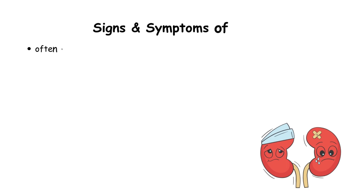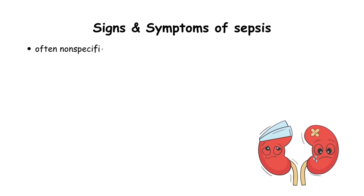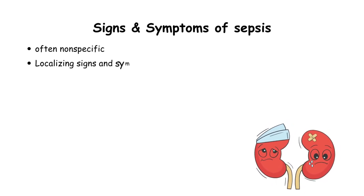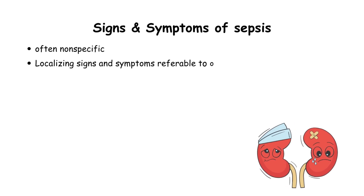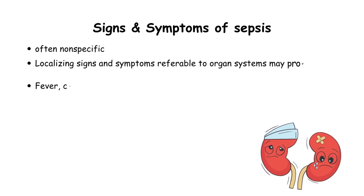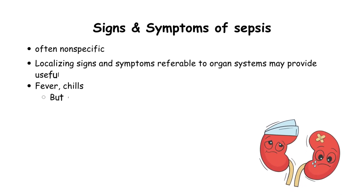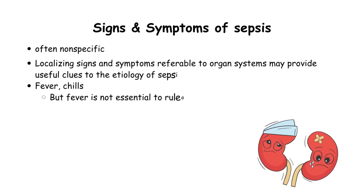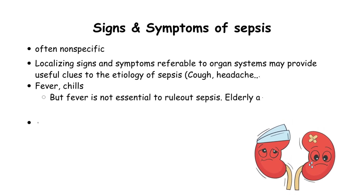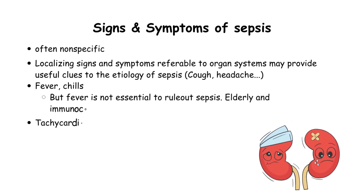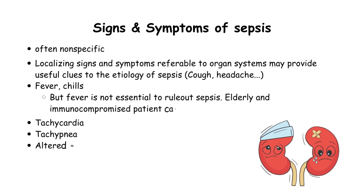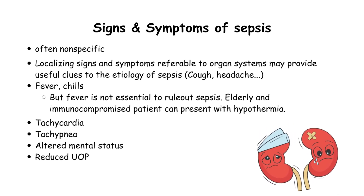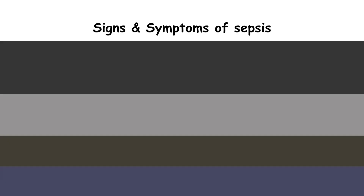The signs and symptoms of sepsis are extremely varied. Usually they present with infection symptoms such as cough and headache. Some patients present with fever, but fever is not essential to diagnose sepsis — hypothermia is also a possibility. Patients can develop tachycardia, tachypnea, and altered mental status, as well as reduced urine output.